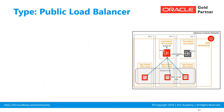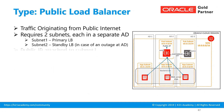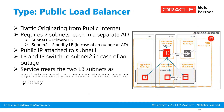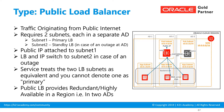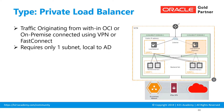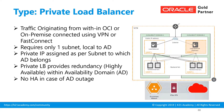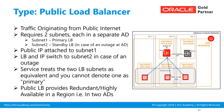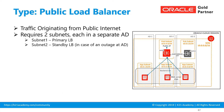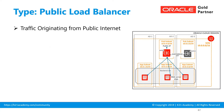For high availability deployment across two availability domains within a region, the load balancer distributes traffic coming from either on-premise or from the internet onto these two backend servers. Now, there are two types of load balancers: public load balancer and private load balancer. Let's look at the properties and characteristics of each.